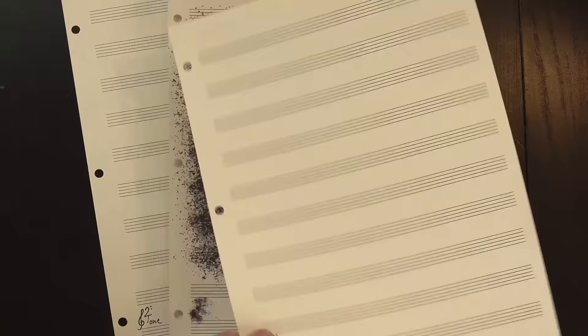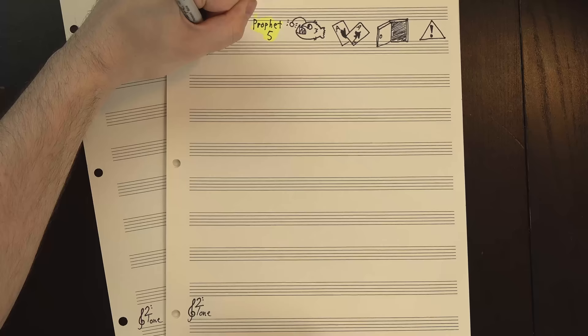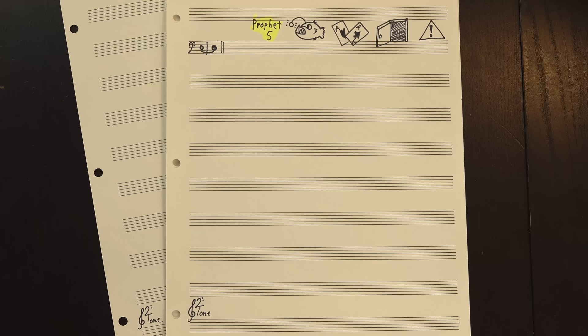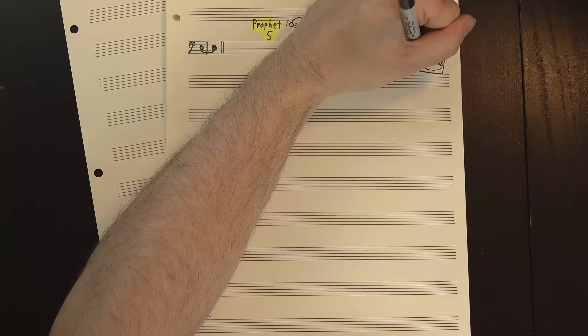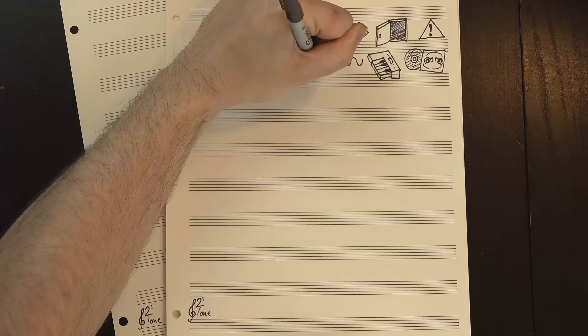But it doesn't go there. Instead, once the guitar is gone, two things happen. First, we get this low D played on a Prophet V, which just hangs out for literally the rest of the song. That's the nice thing about synths. There's no physical reason for the note to ever fade, so if you want it to play for five minutes, you can just do that. The synth doesn't care.